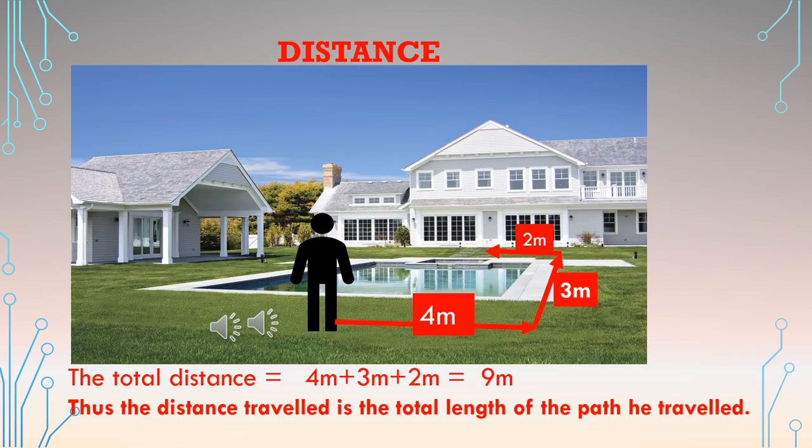From A to B he walks 4 meters, from B to C 3 meters, and C to D 2 meters. Thus this man walks a total distance of 4 plus 3 plus 2, that is 9 meters, to reach his door from the point where he stands.